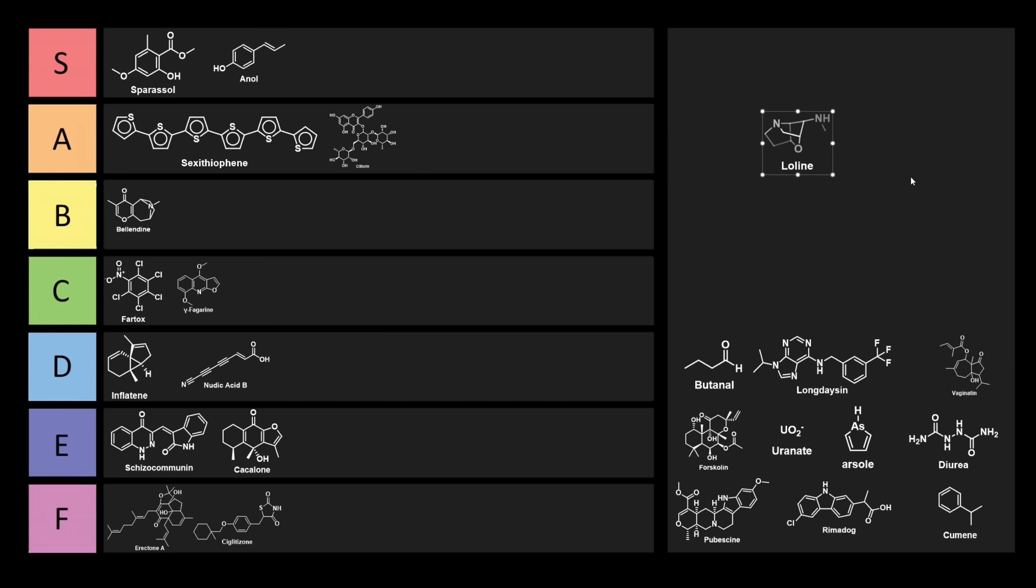Now here we have Epstein's favorite molecule. We have loline. This is from the grass lolium temelentum. Loline is definitely an unfortunate name. Some people might be thinking that this will make you laugh out loud, and it depends on which pun you're looking at in here. So loline has somewhat of an unfortunate name, so I think we could probably put this one into D tier.